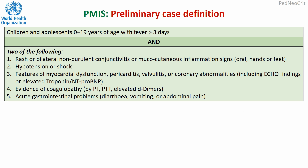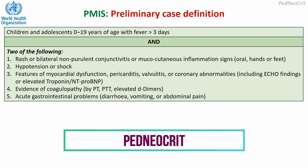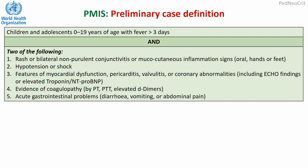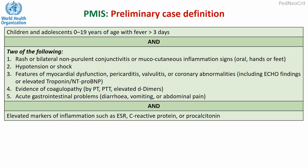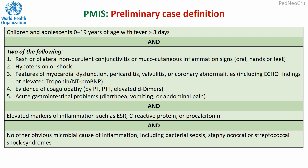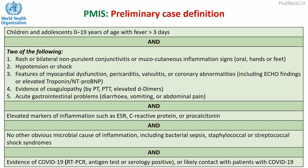The WHO case definition covers children and adolescents 0–19 years of age with fever more than three days and two of the following: rash or bilateral non-purulent conjunctivitis or mucocutaneous inflammation signs; hypotension or shock; features of myocardial dysfunction, pericarditis, valvulitis, or coronary abnormalities; evidence of coagulopathy; acute gastrointestinal problems like diarrhea, vomiting, or abdominal pain; and elevated markers of inflammation such as ESR, CRP, or procalcitonin. No other obvious microbial cause, and evidence of COVID-19 infection or likely contact with patients.